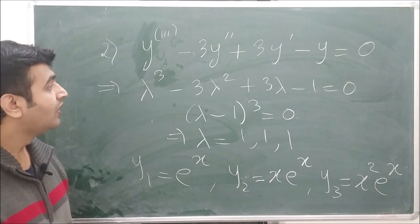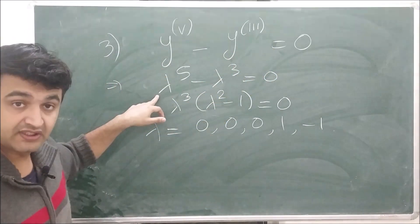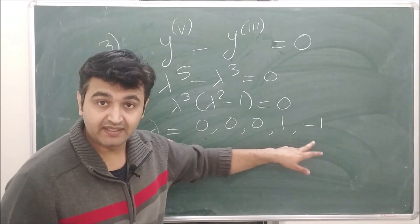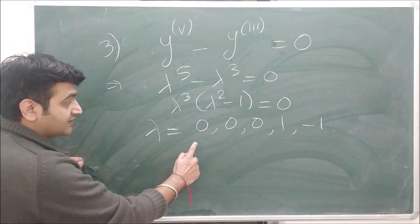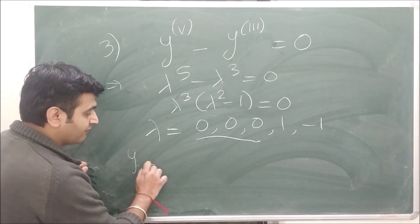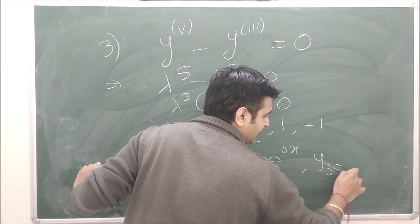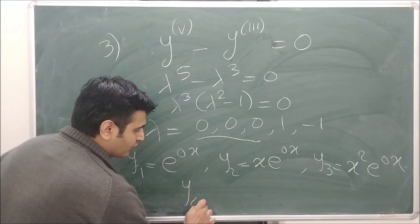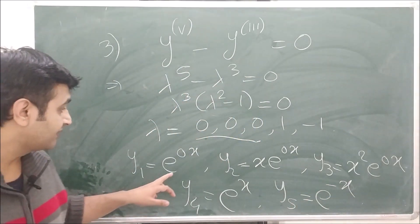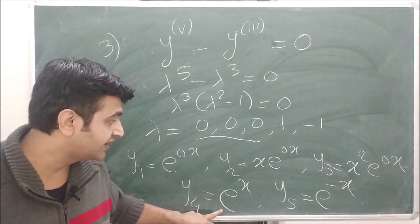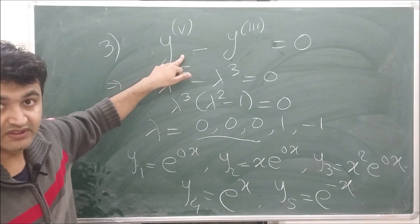Next example: the fifth order equation y⁽⁵⁾ − y⁽³⁾ = 0. Writing the auxiliary equation and factorizing gives roots 0, 0, 0, 1, and −1. For the triple root at 0, the solutions are e^(0·x) = 1, x·e^(0·x) = x, and x²·e^(0·x) = x². Then y₄ = e^x and y₅ = e^(−x). So the five linearly independent solutions are 1, x, x², e^x, and e^(−x).